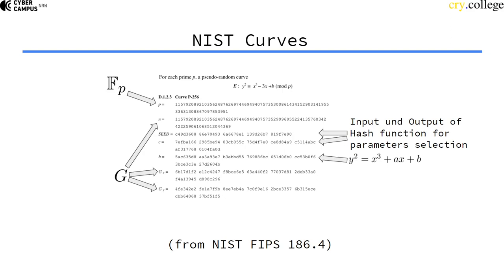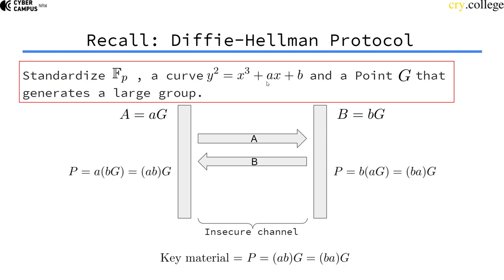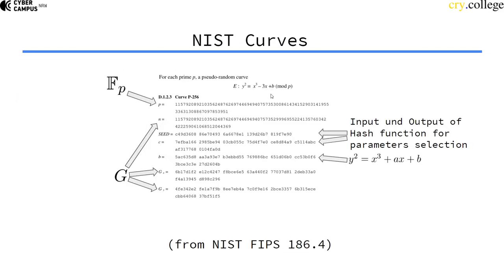This standard says that the A parameter in the curve equation is minus 3. And the rest is in the standard. P is the prime number that is being used for the finite field.